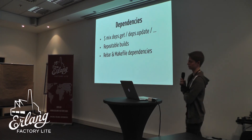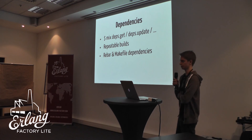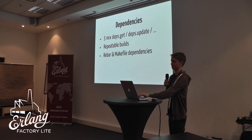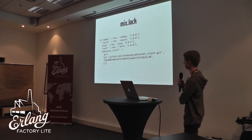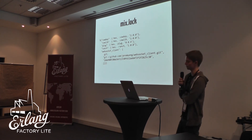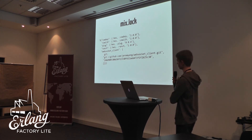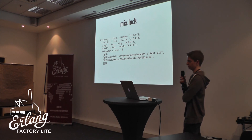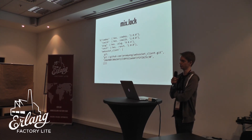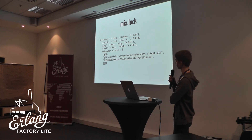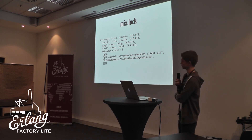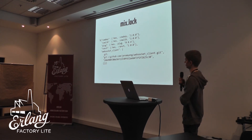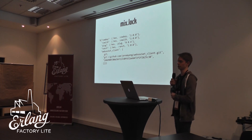We have a bunch of tasks for handling dependencies: deps.get, deps.update, and so on, for fetching, for updating, for listing your tasks. With the dependencies, we have reproducible builds. What that means is that we have a Mix lock file which stores the information about each dependency. For example, we have WebSocket client where we store the URL, how to fetch it, and the hash. For Hex packages, we can just store the package name and its version because they are all unique. This file should be committed so that all users of the project will get the same versions of each dependency as the one you are using and have been testing.